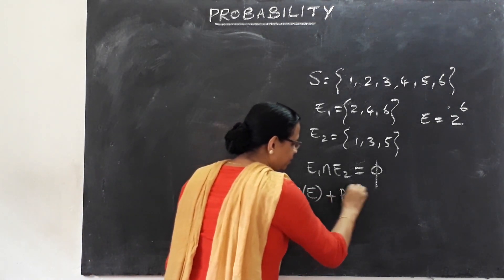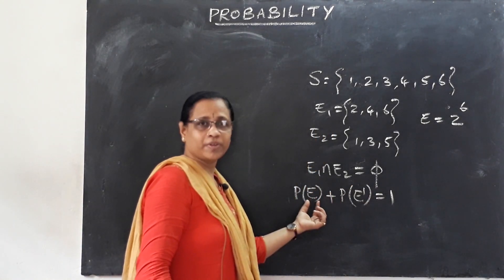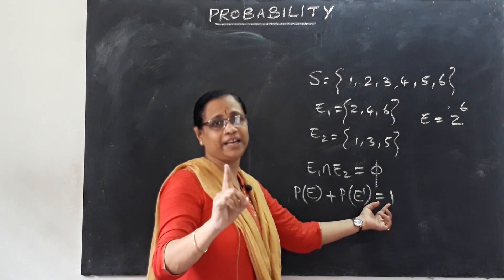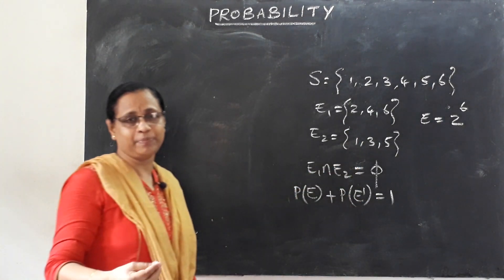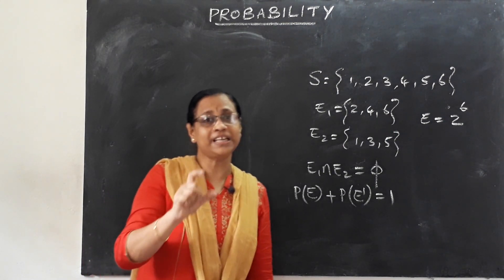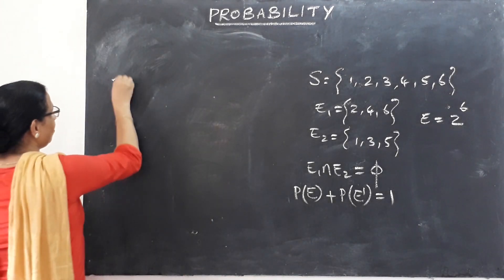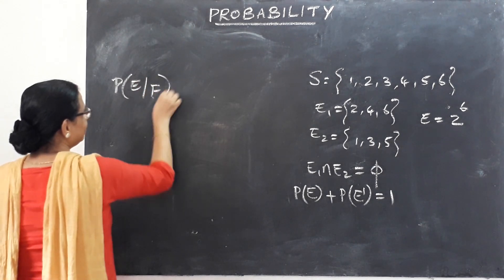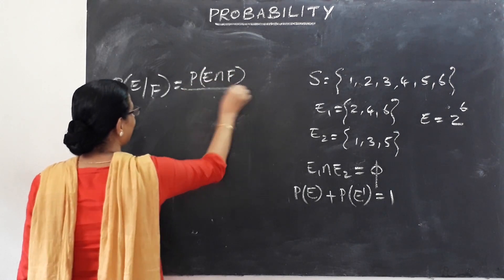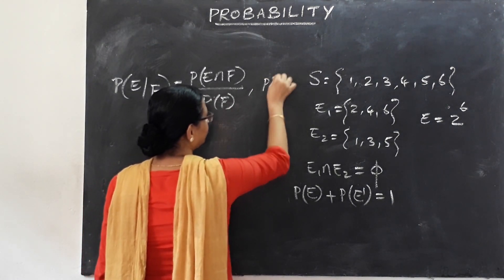An important point: the probability of E plus the probability of E dash (complement) is equal to 1. Now, the conditional probability formula: the probability of E given F is equal to the probability of E intersection F divided by the probability of F, where the probability of F is not equal to zero.